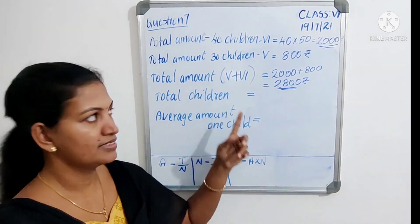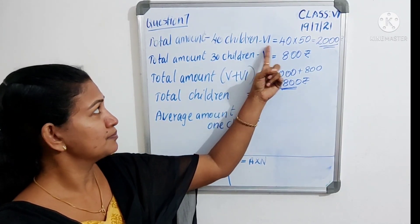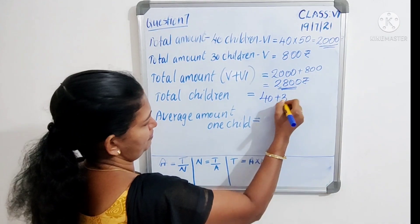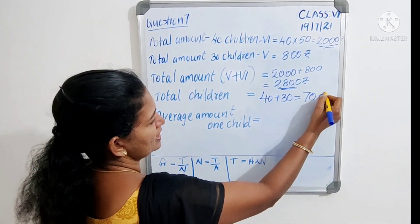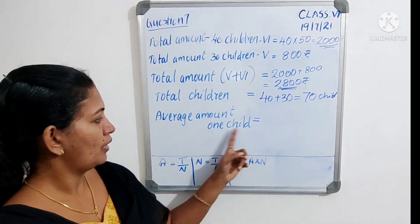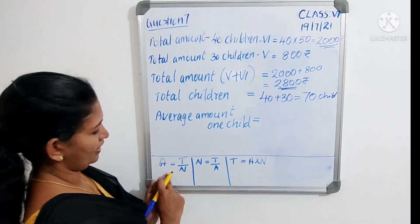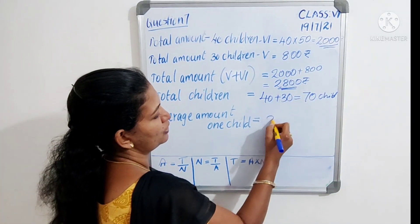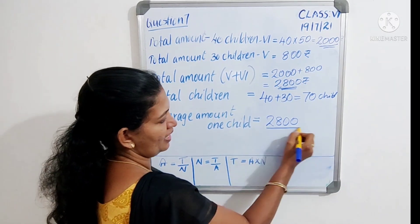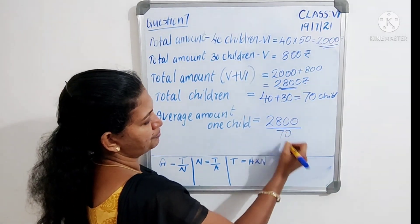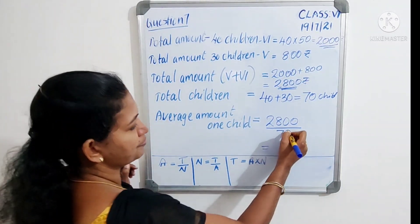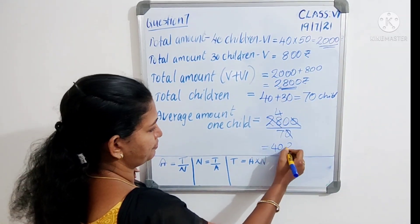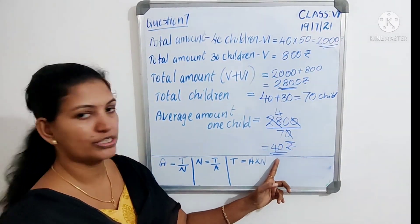Next, find the total number of children. Class 6 has 40 children and class 5 has 30 children, so 40 plus 30 is equal to 70 children. To find the average amount per child for both classes together: average is total divided by number, which is 2800 divided by 70. Dividing, each child donated 40 rupees on average.